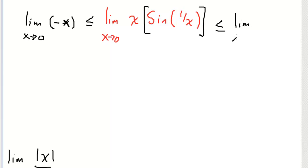And the largest sine of any argument can be is going to be positive 1. So this is limit x goes to 0 of positive x. I'm writing the plus just to make it explicit.